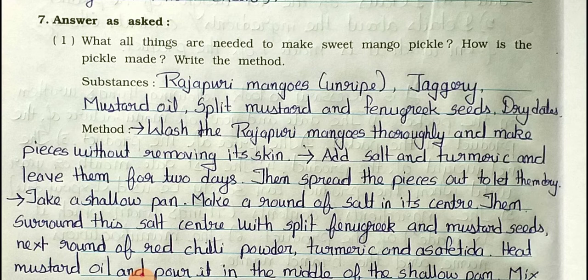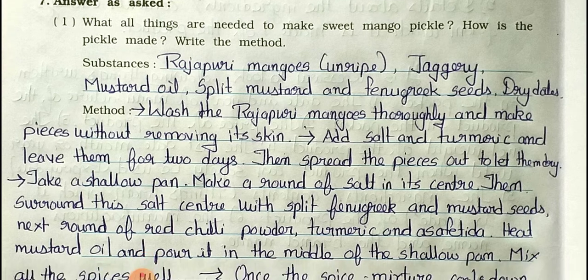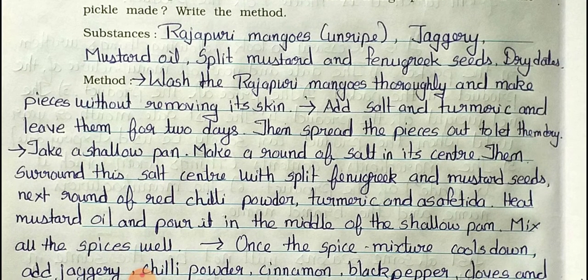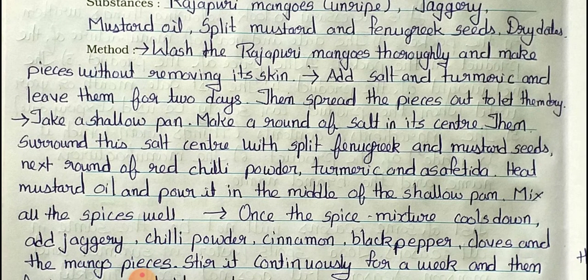Method: Point 1 — Wash the Rajapuri mangoes thoroughly and cut into pieces without removing the skin. Add salt and turmeric and leave them for two days, then spread the pieces out to let them dry. Point 2 — Take a shallow pan, make a round of salt in its center, then surround this salt center with split fenugreek and mustard seeds.